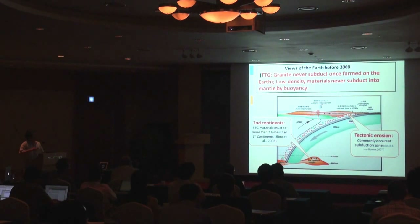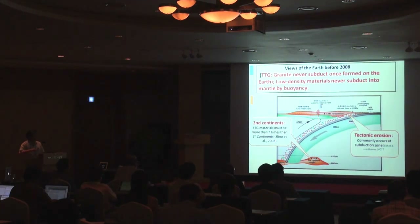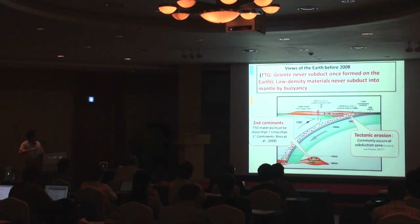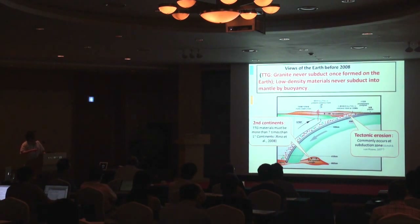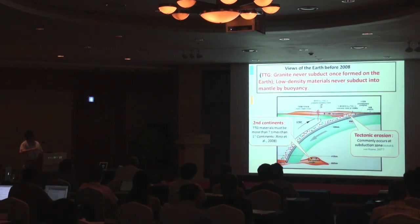For example, in the case of Japan, the present volcanic front is here. But 100 million years ago, the volcanic front — which is granite — was almost near to the trench. The blocky material represents tectonically eroded material moving into the mantle transition zone. The second continent: TTG material must be more than seven times that I mentioned, and this may also work to stop slab penetration.